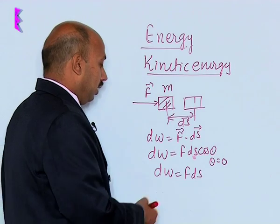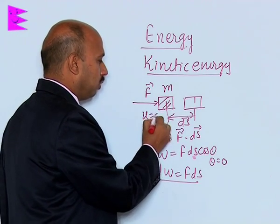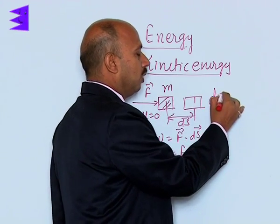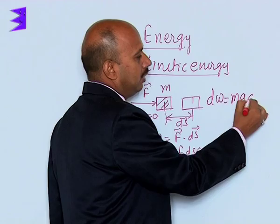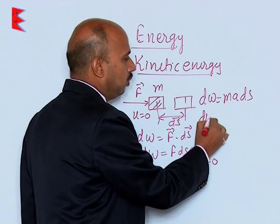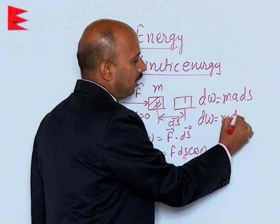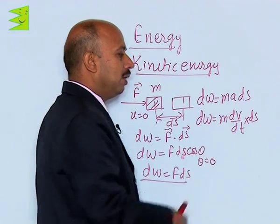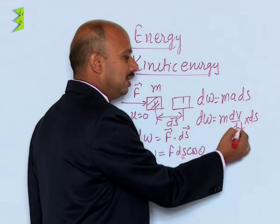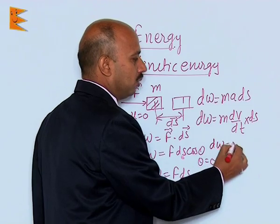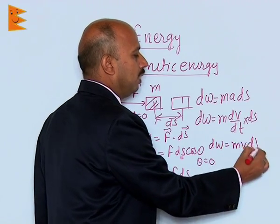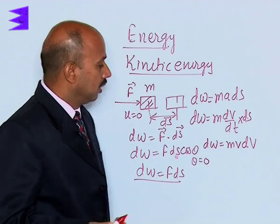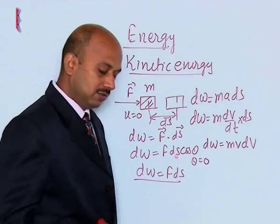Initially the body was at rest, so the initial velocity was 0. We can write dW = m · a · ds, and since acceleration a = dv/dt, we get dW = m · (dv/dt) · ds. Since ds/dt is velocity, we can write dW = m · v · dv.